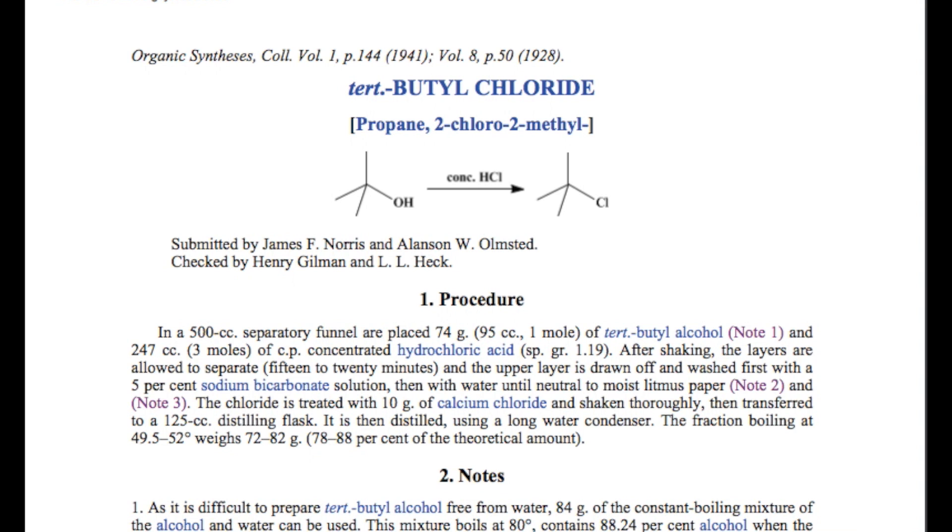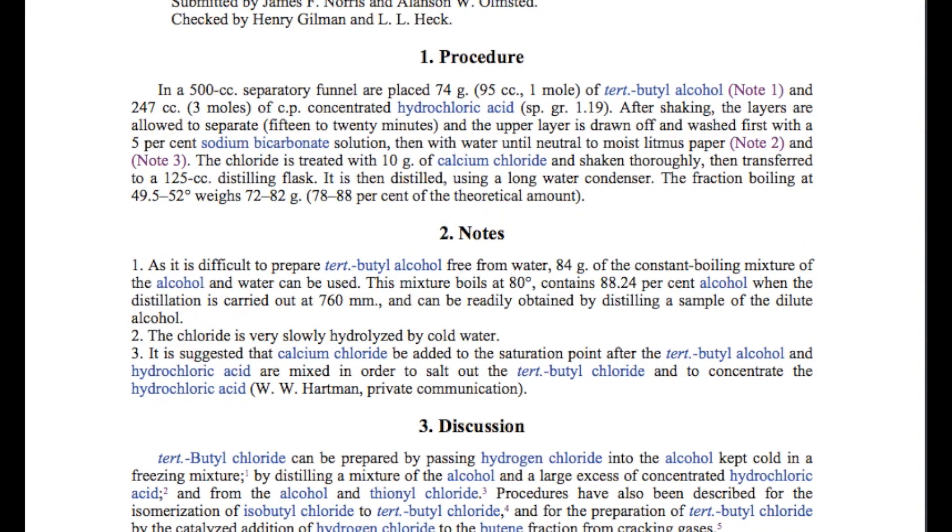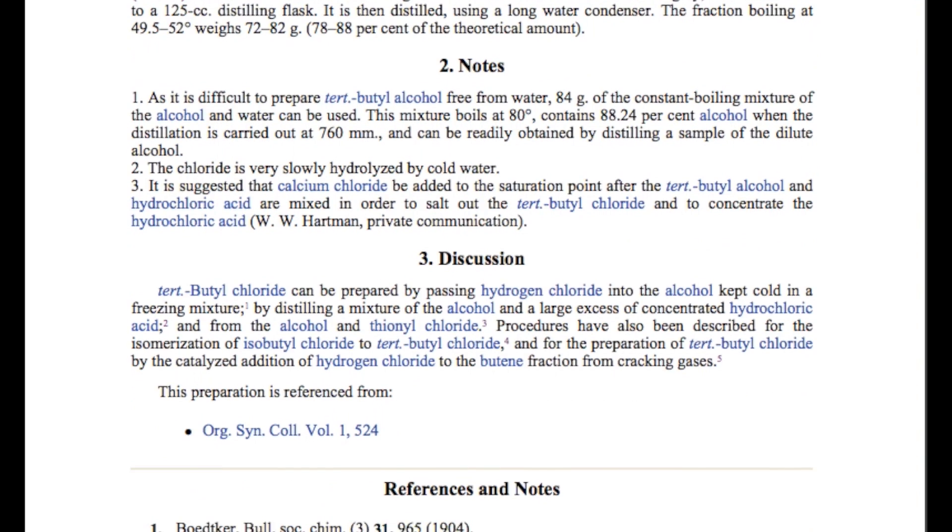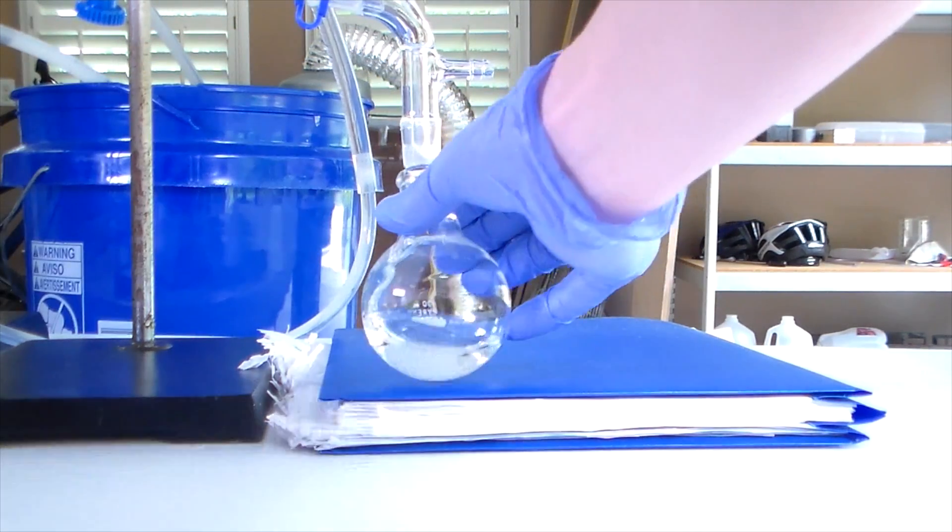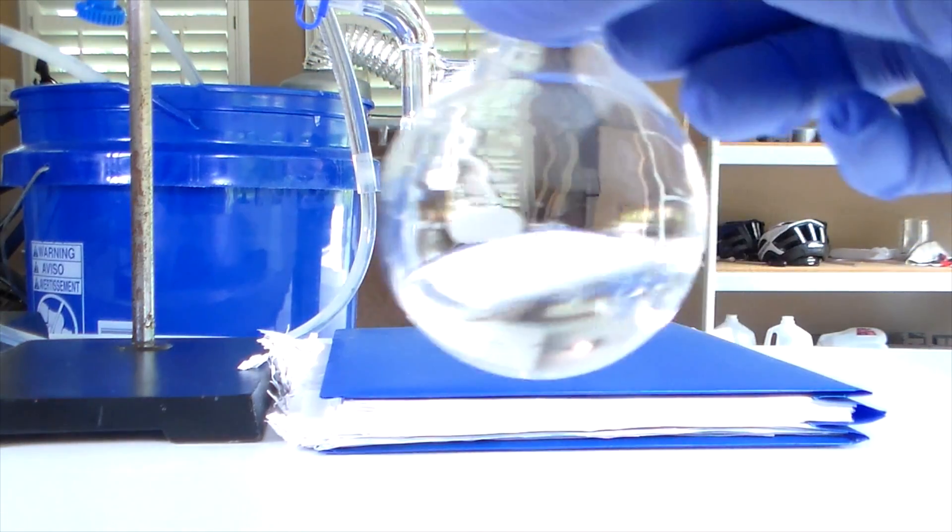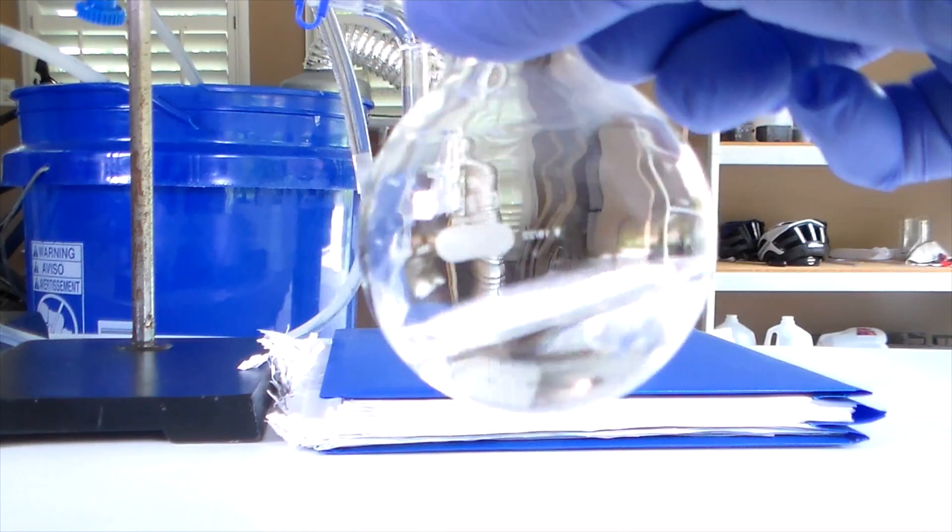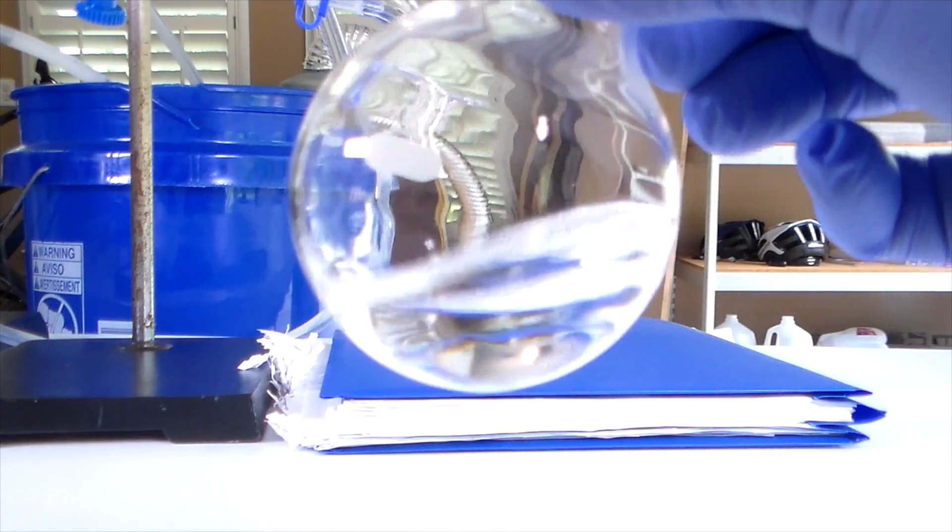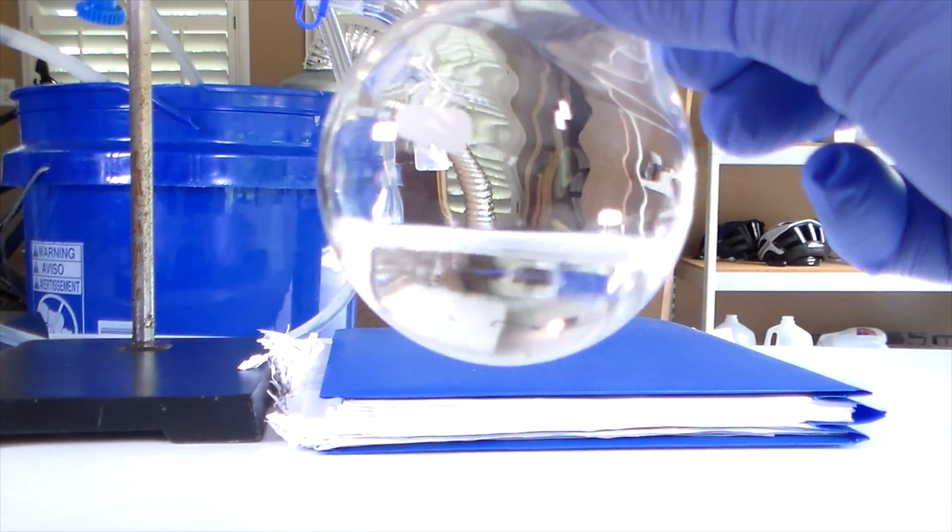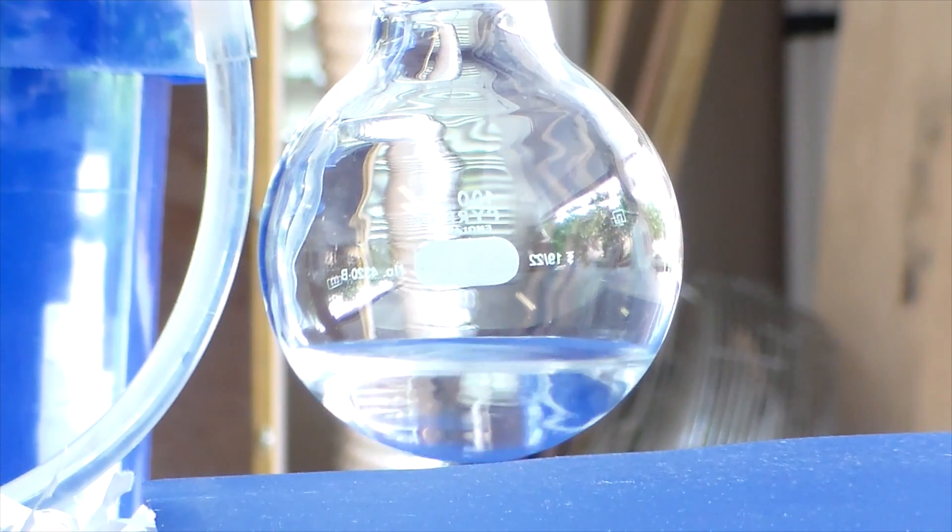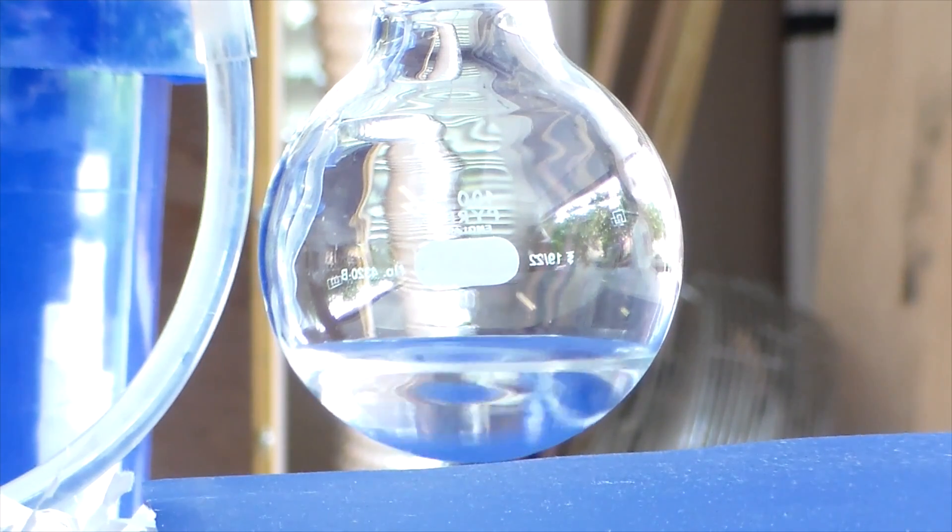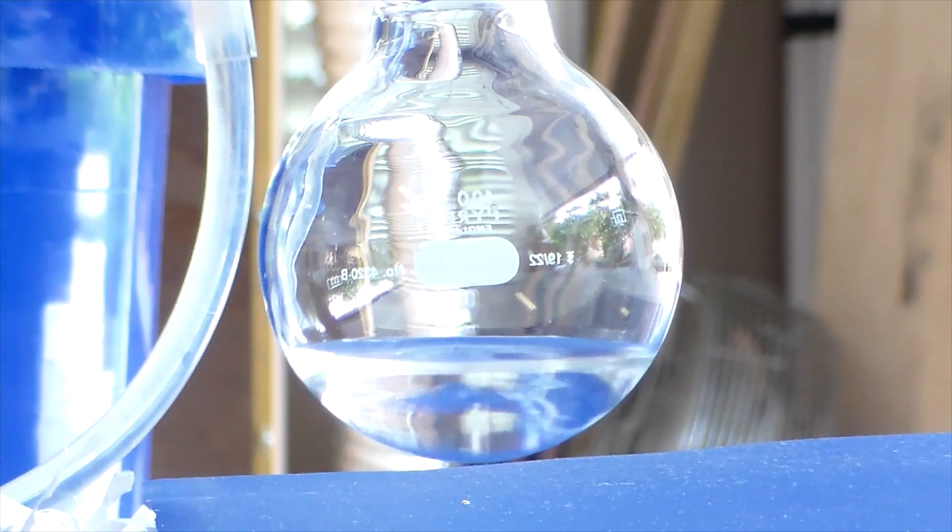This corresponds to about a 50% yield. The original preparation claims a 78 to 88% yield, so this is a bit low. I think the two main reasons for the lower yield was the fact that I did this experiment on a smaller scale, and that I had to distill the product twice because I didn't add the calcium chloride the first time. Also, this percent yield assumes that my alcohol is 100% pure, so the actual percent yield might be a little higher.